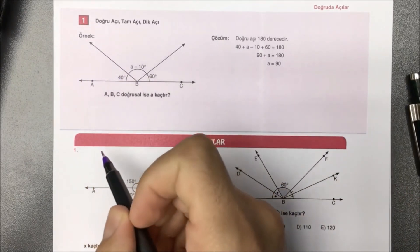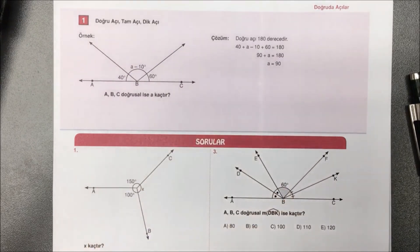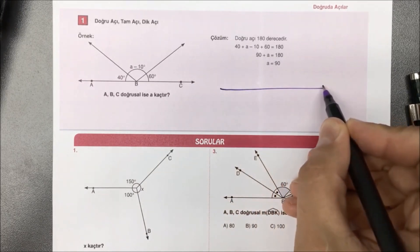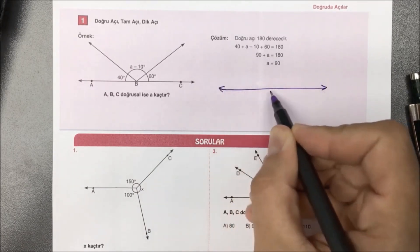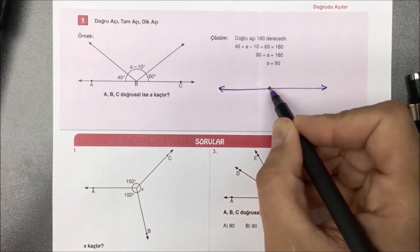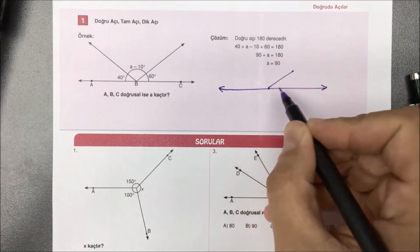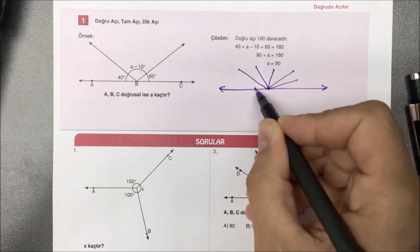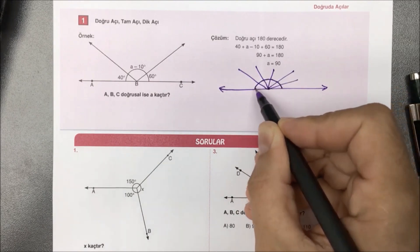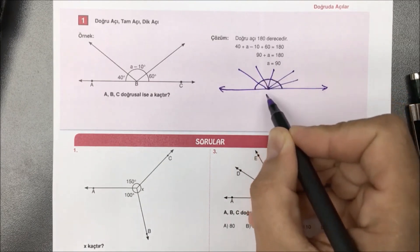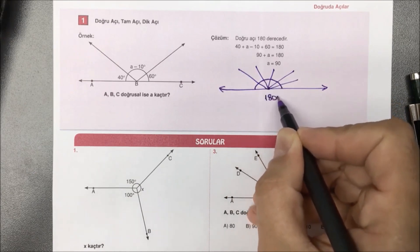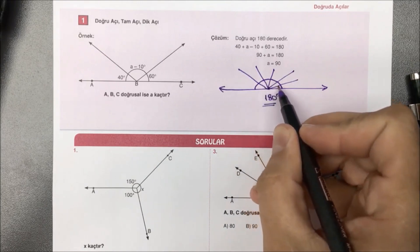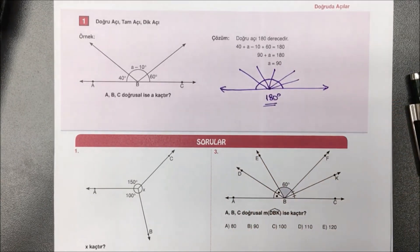Birinci konumuz doğruda açılarda ilk olarak vermek istediğim bilgi doğru açı. Doğru açı, bir doğrunun üzerindeki herhangi bir noktanın etrafında bulunan açıların toplamıdır. İster 2 ister 3 ister 4-5 fark etmez arkadaşlar; şuradaki açıların hepsini toplarsanız toplamları 180 derece olur. Yani doğru açı, 180 derece; bir noktanın etrafındaki tüm açıların toplam derecesidir.